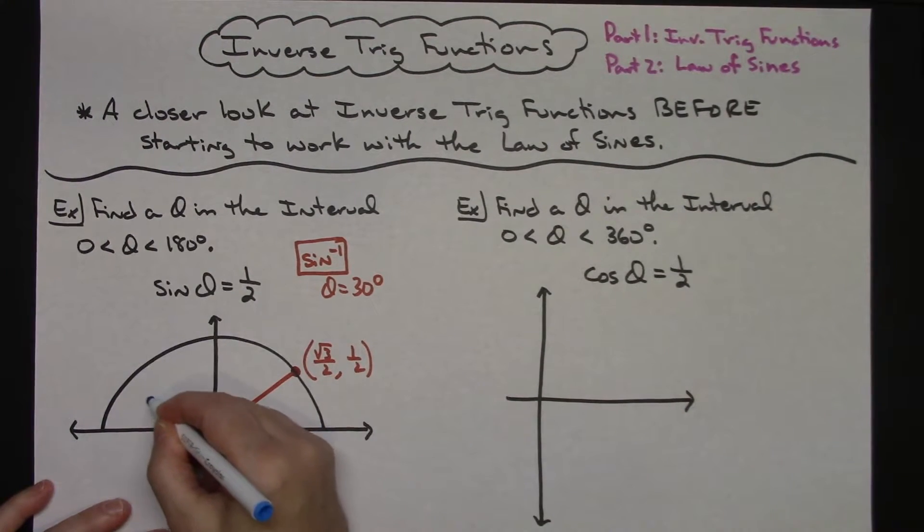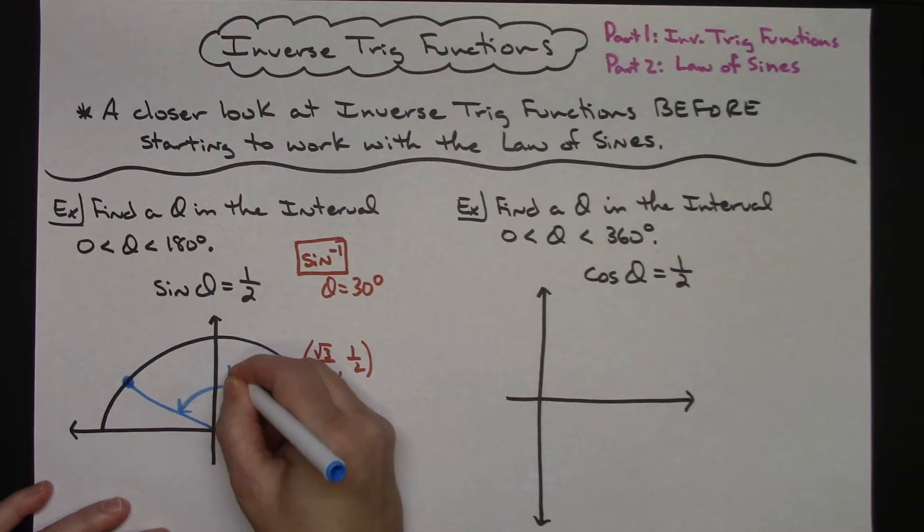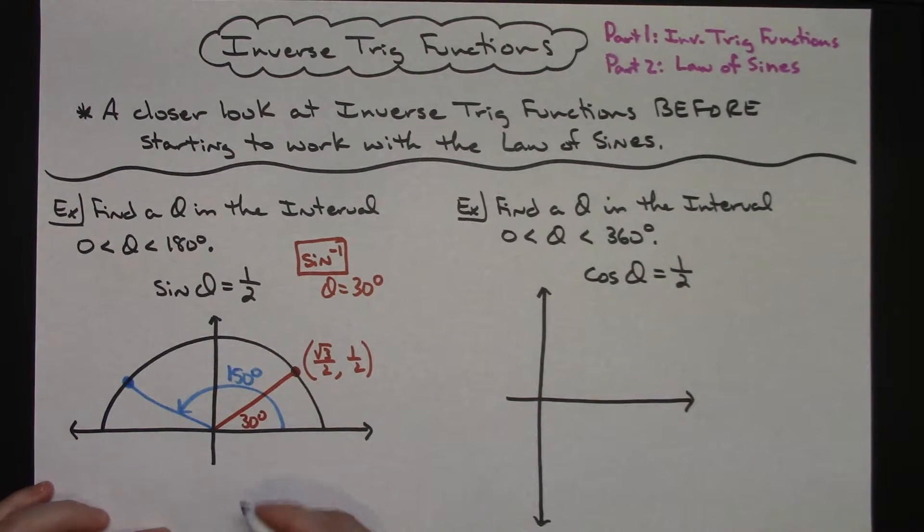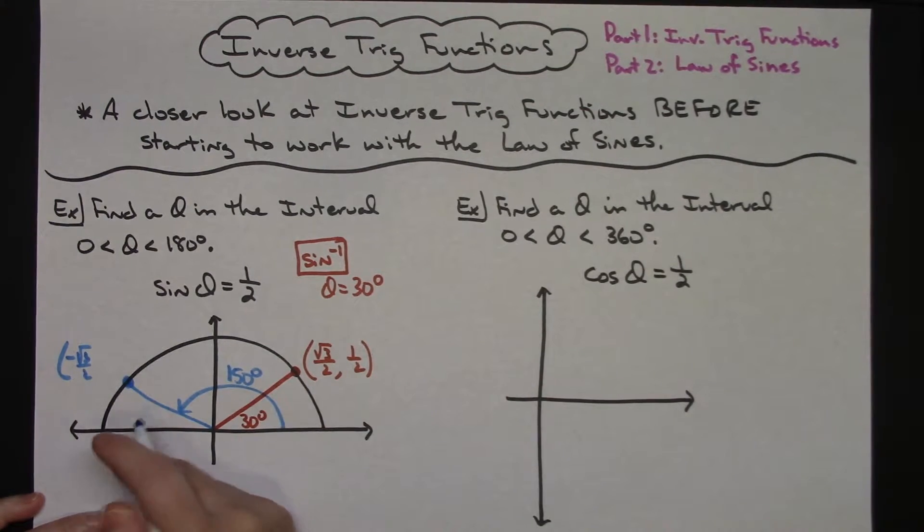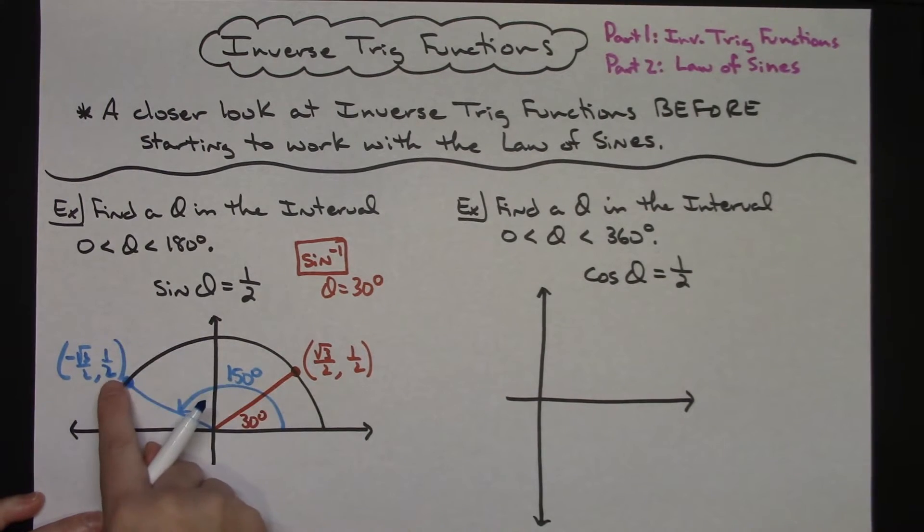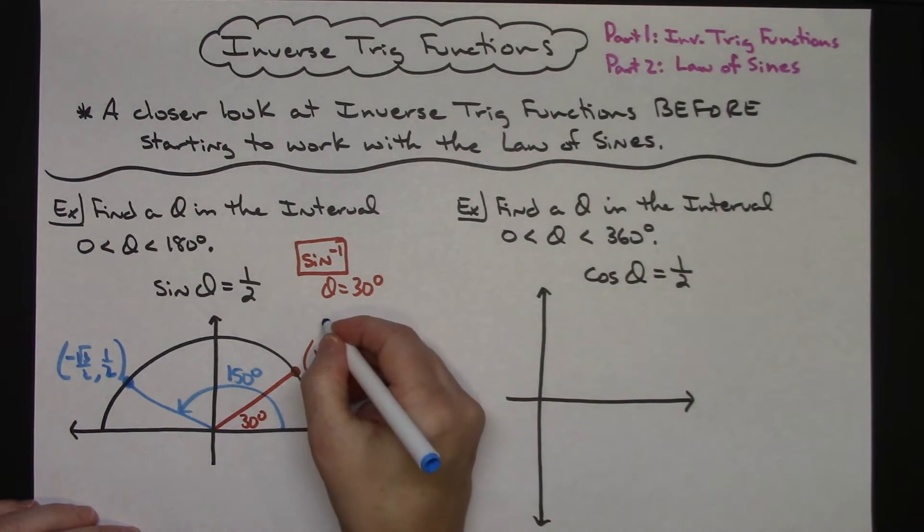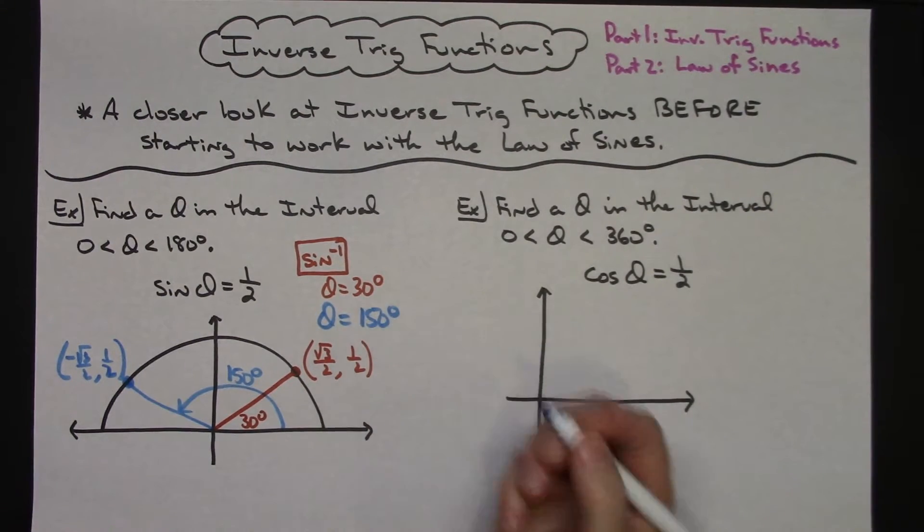Over here at exactly 150 degrees, I will have negative square root of 3 over 2 because I'm going left, and then up one half to that point. So sine is one half again. Another theta is 150 degrees. You've got two possible choices.